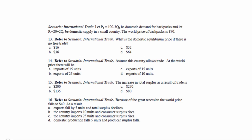Here are the first four questions, 13 to 16. We're going to give you a supply curve and a demand curve — this is for backpacks. We're also going to tell you that the world price of backpacks is $70. The first question asks: what's the domestic equilibrium price if there is no free trade?